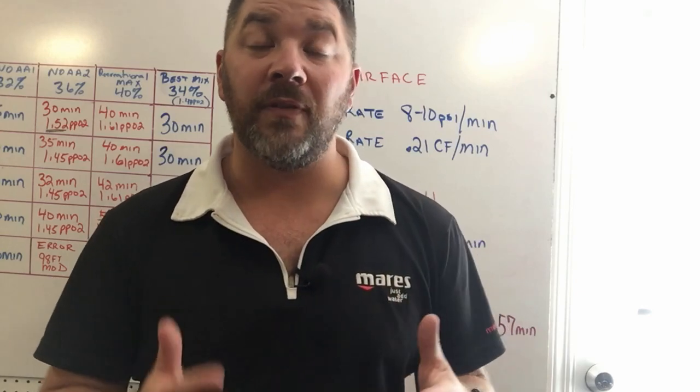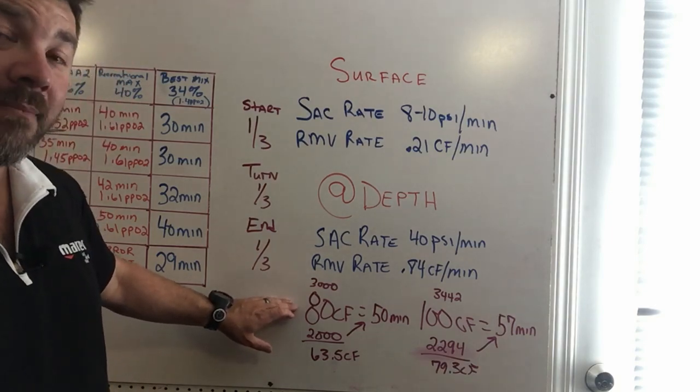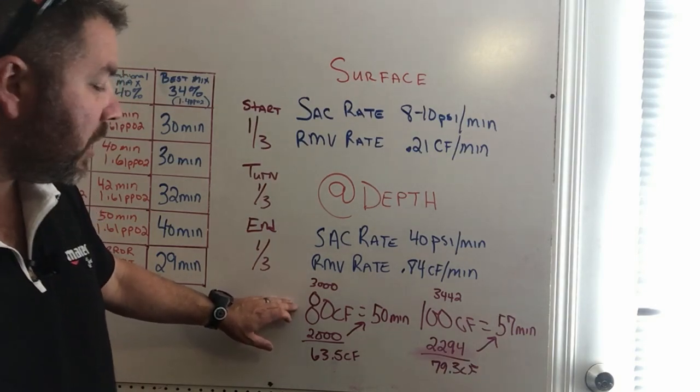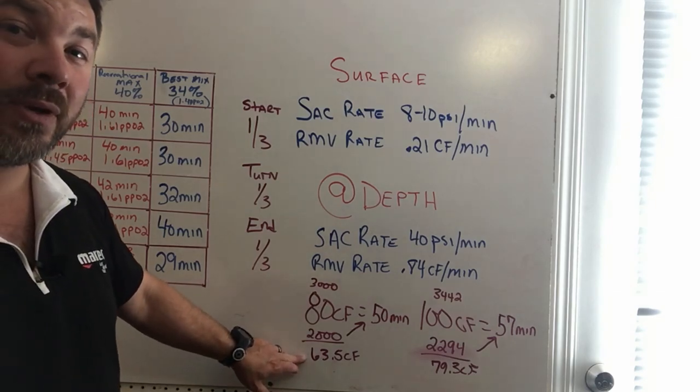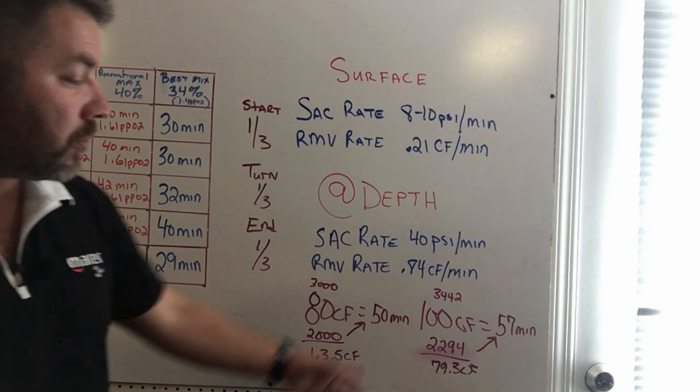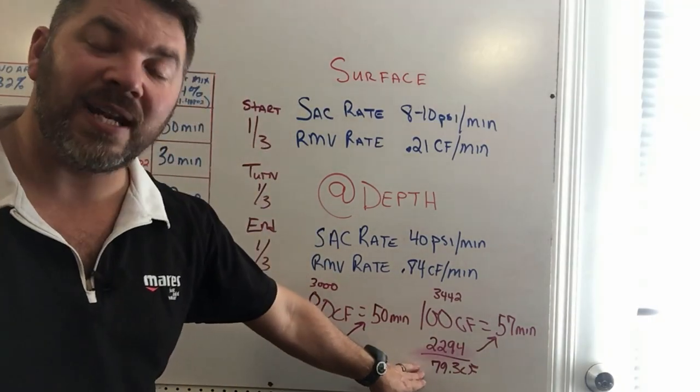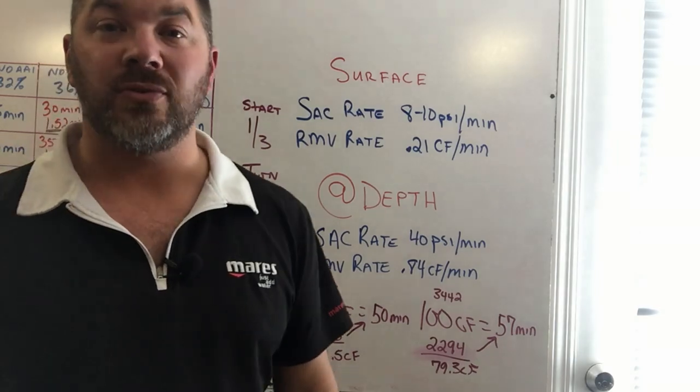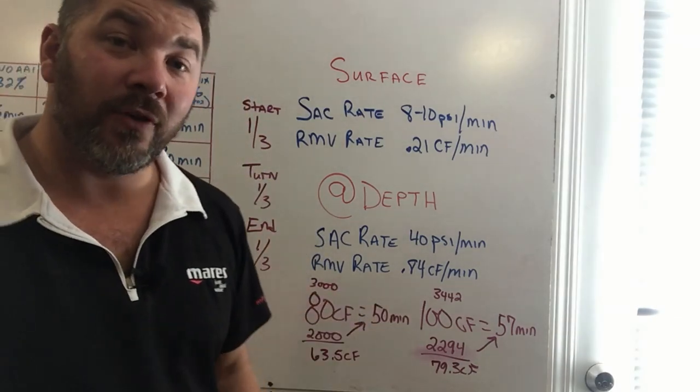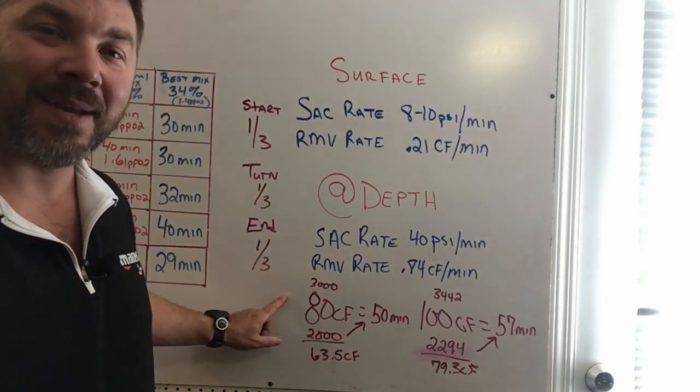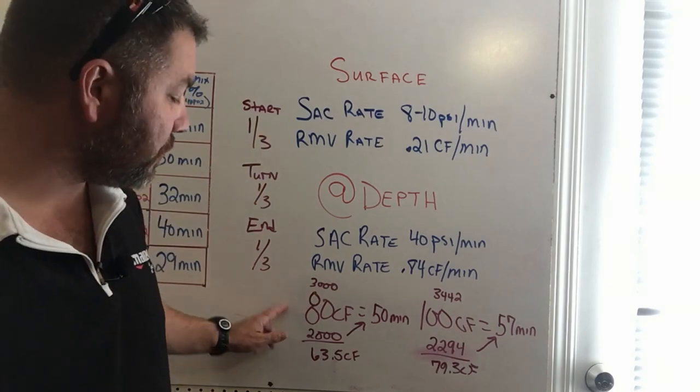If we did it in cubic footage, it's the exact same figure. We simply take our cubic footage of the cylinder, divide by three, times by two. So 80 cubic foot divided by three times two gives me 63.5 cubic foot, and 100 cubic foot divided by three times two gives me 79.3 cubic foot of actual usable gas. Now one thing that's really funny here is the 100 cubic foot with two-thirds workable gas is the exact same size as the 80 cubic foot using the entire cylinder.